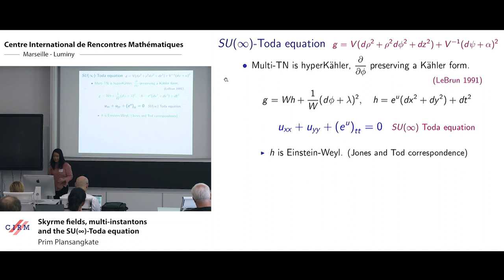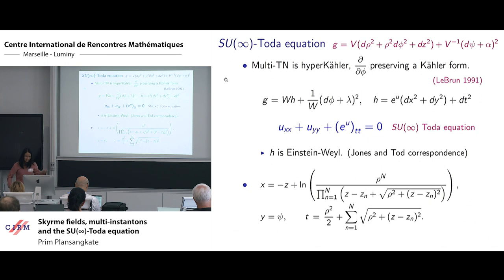To obtain an expression of the solution, we can do it by writing our metrics in the LeBrun ansatz. It turns out that we can choose the coordinates X, Y, T to be these expressions here. So it's a quite complicated expression. And then you can read off the solution to be log of rho square. And the solution is independent of the Y coordinate.